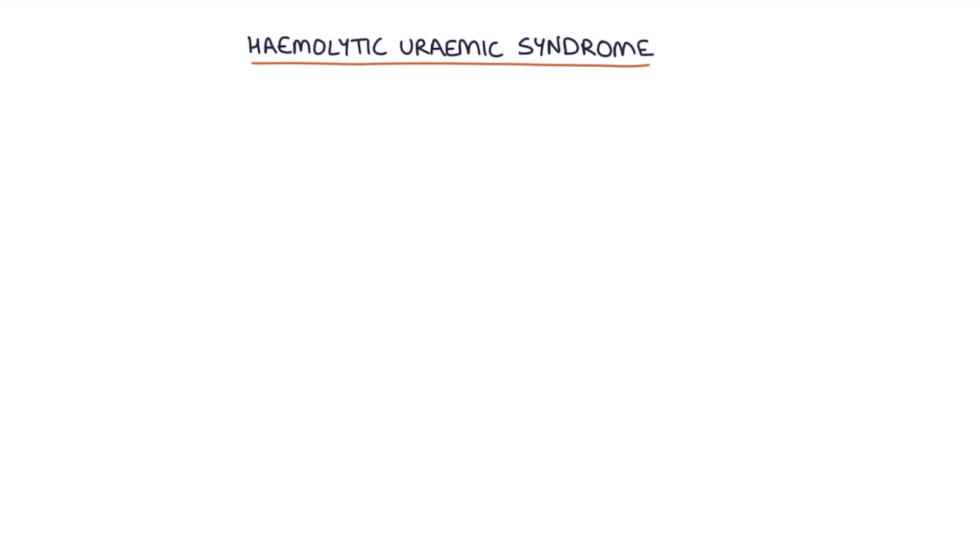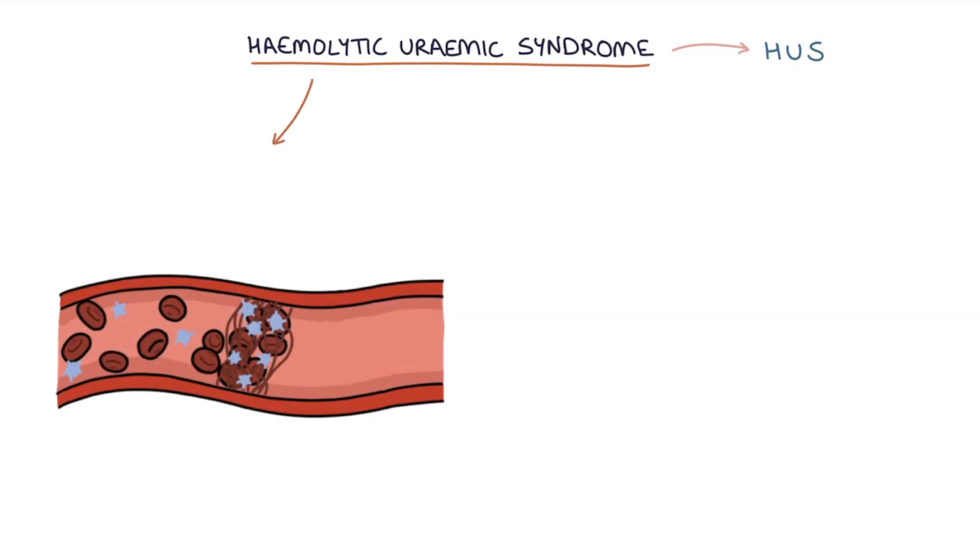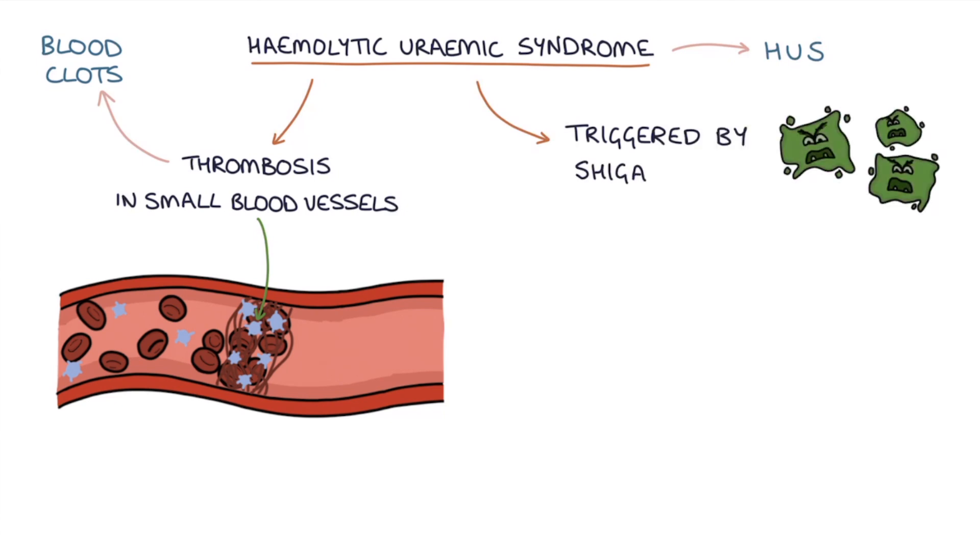Hemolytic uremic syndrome, also known as HUS, occurs when there's thrombosis in the small blood vessels throughout the body. Remember, thrombosis is blood clots, so this is where little blood clots occur within the small blood vessels throughout the body. This is usually triggered by a bacterial toxin called the Shiga toxin.